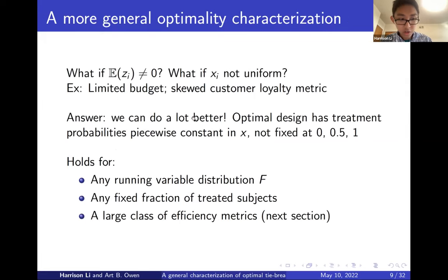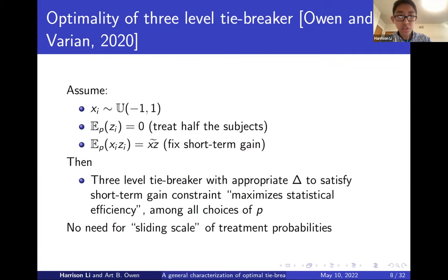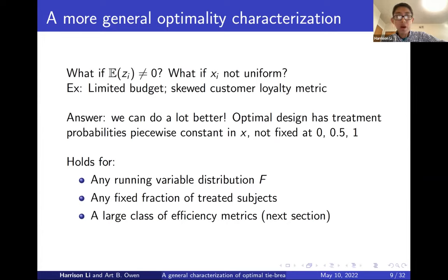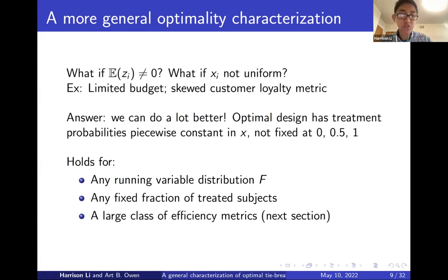That's a great result, but some assumptions are restrictive. What if E of z cannot be zero — what if you can only treat a fraction of your subjects? And what if the running variable x is not uniform or not symmetric? You could rank-transform the x's, but then your linear modeling is on a different scale and coefficients are less interpretable. So we want to handle a non-symmetric x and arbitrary treatment budgets.